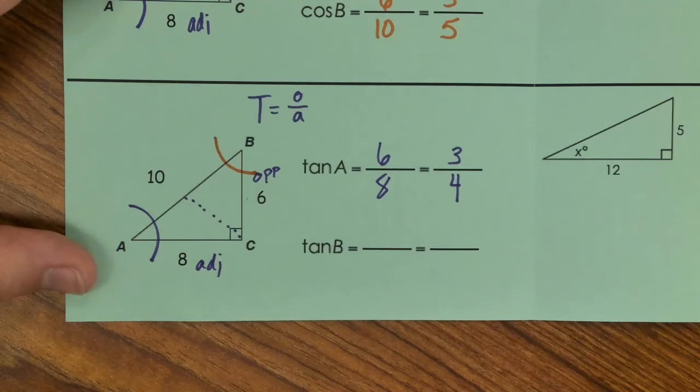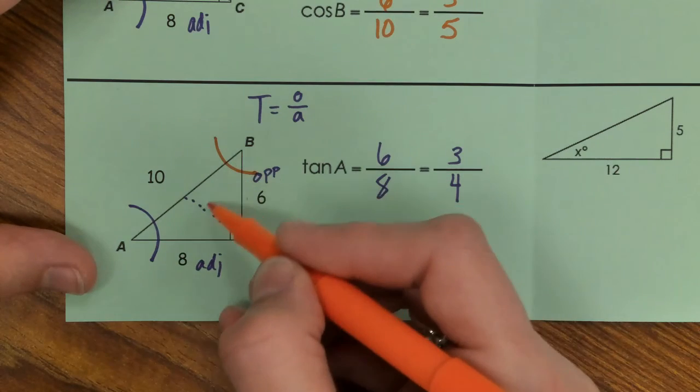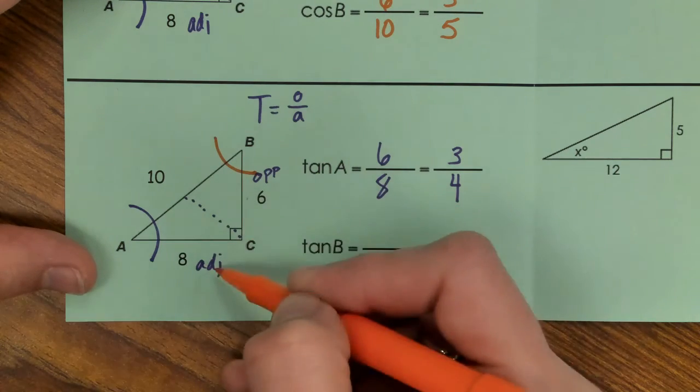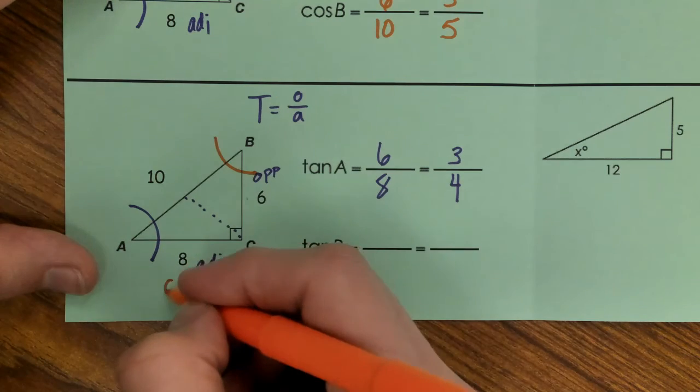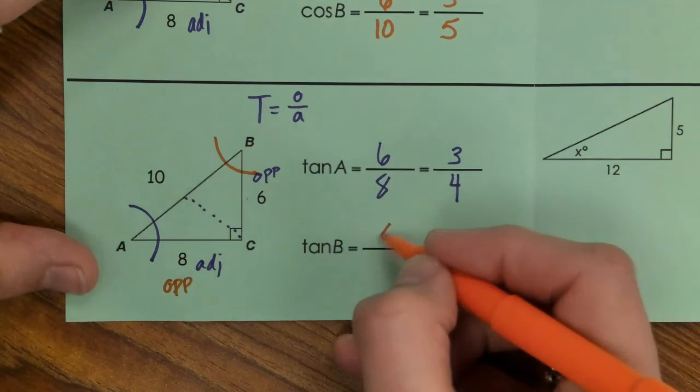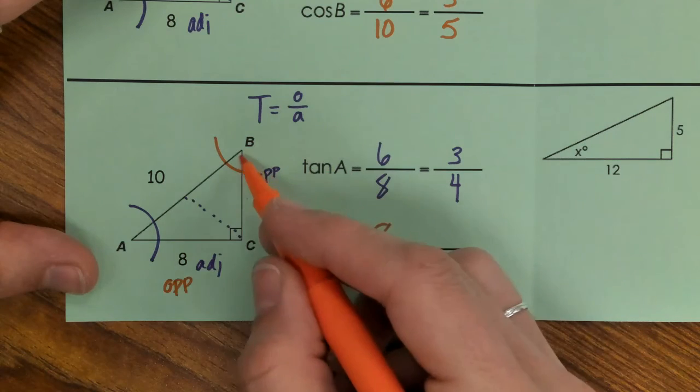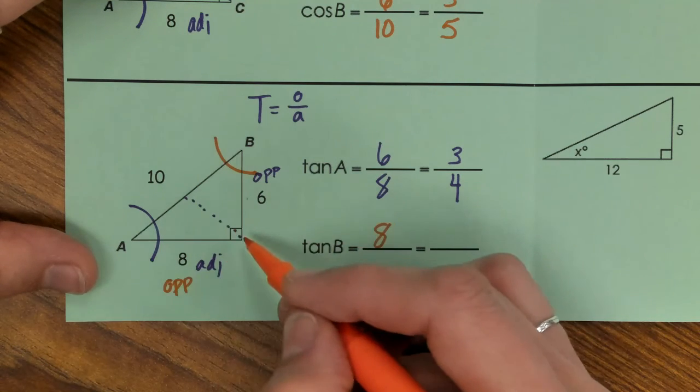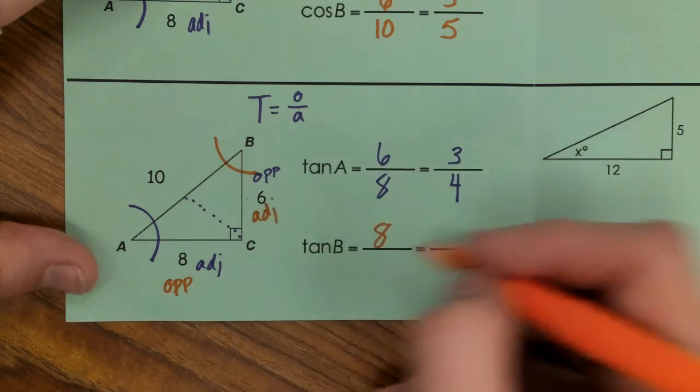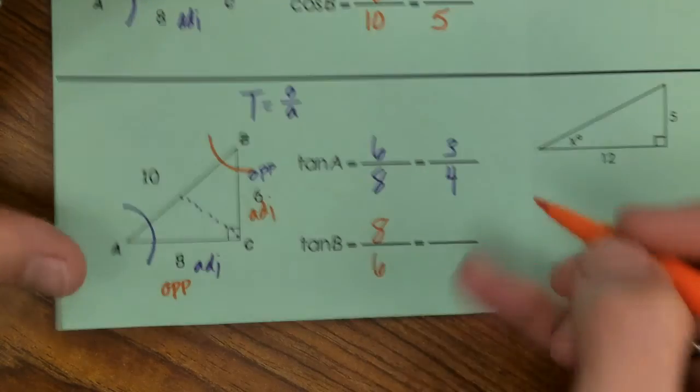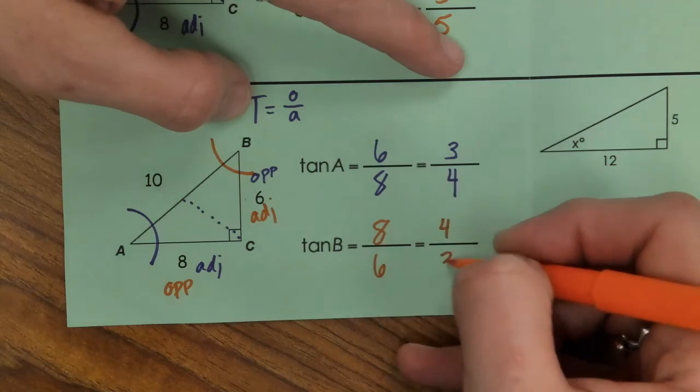Kick over to tangent of reference angle B. Now our opposite and our adjacent have switched because we switched angles. So opposite of B, we have our 8, and then our adjacent—again not the 10 because it's the dashed line, our hypotenuse—so adjacent will be the 6. This comes out to simplifying to 4 over 3.